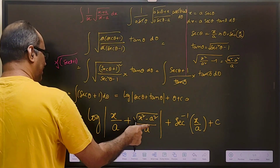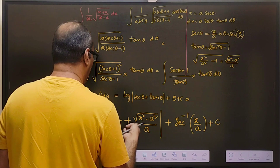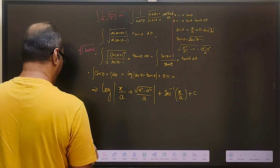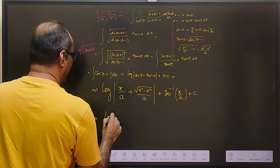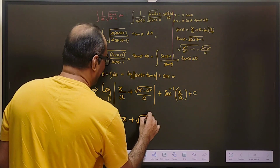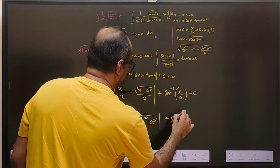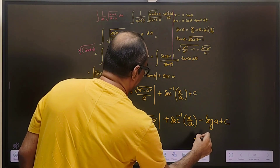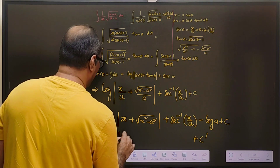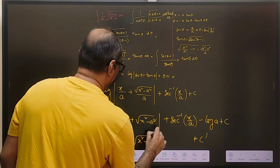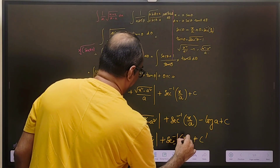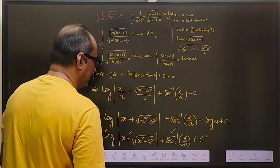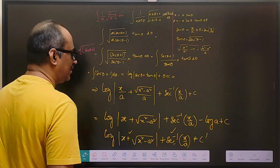Now we can do one more small simplification. We can write the logarithm as log of a minus log of b, and take out the 'a' value, absorbing log(a) into a new constant c dash. So our final answer is: log of (x plus square root of (x squared minus a squared)) plus secant inverse of (x by a) plus c. The same answer can also be written in terms of tan inverse, and different equivalent forms exist, but ultimately the solution is the same.